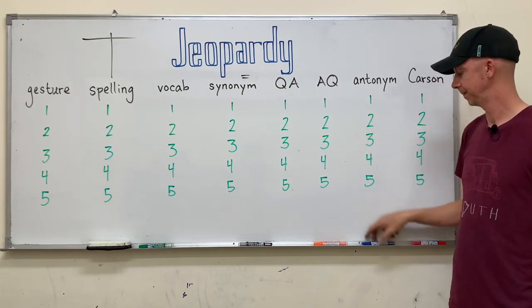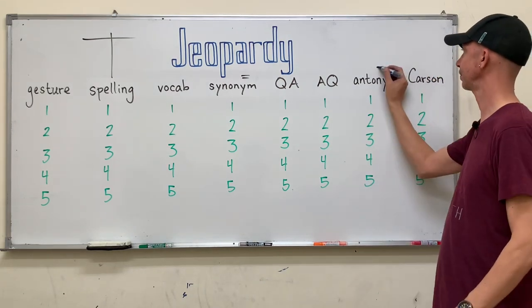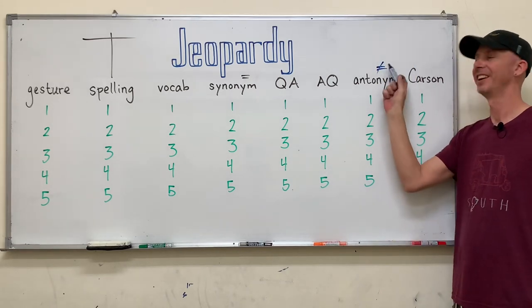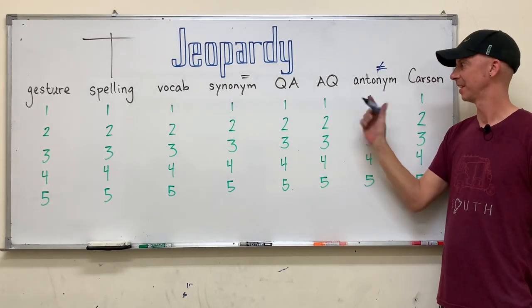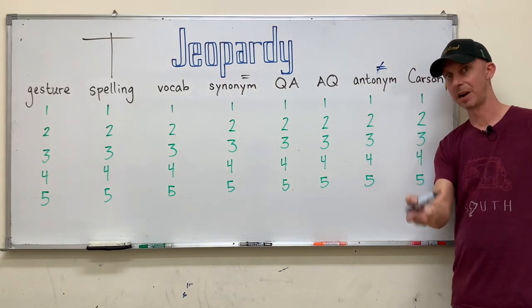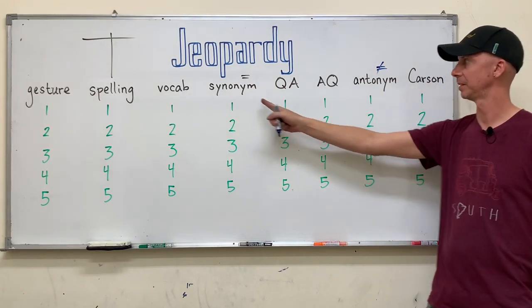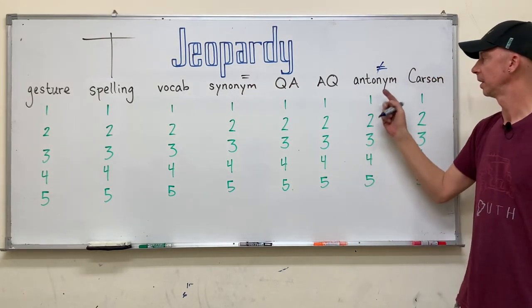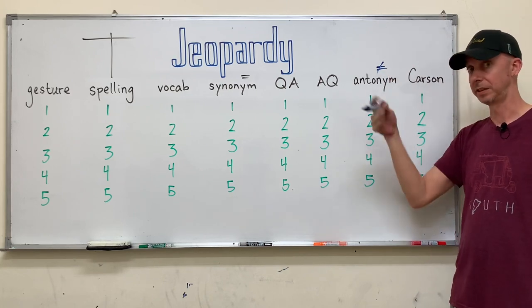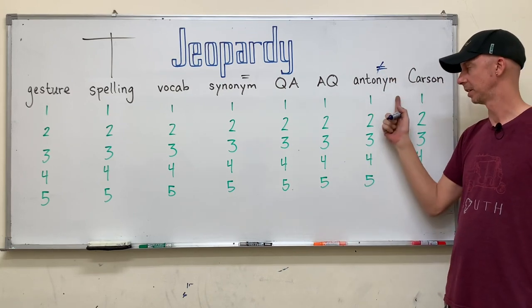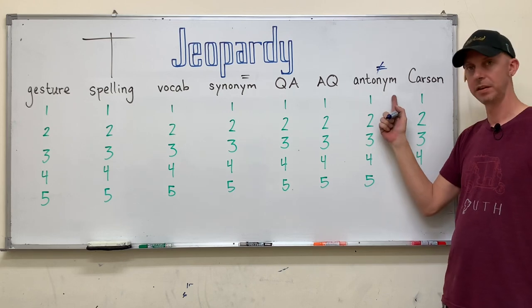An antonym is the same but different, right? So it is the opposite of whatever my prompt word is what I'm looking for. It's the opposite of a synonym. I might draw this doesn't equal that. So bad, good. Fat, thin. Something like this.